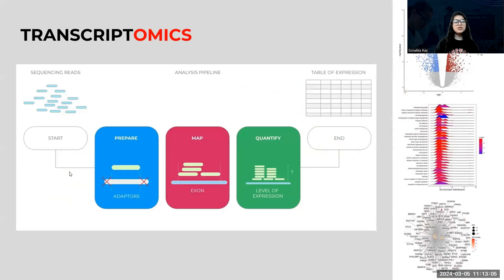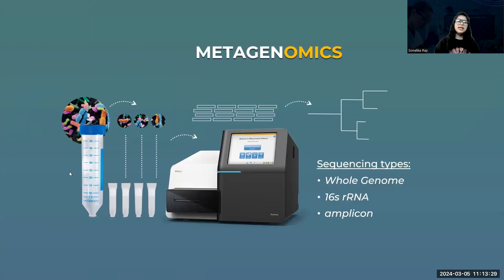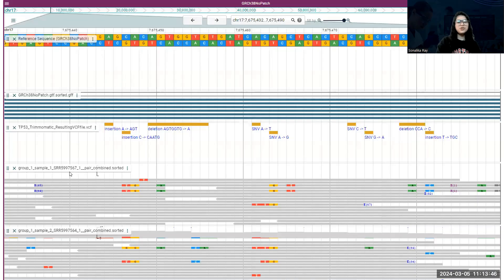Then we'll dive into an introduction to transcriptomic data analysis. Transcriptomics is the study of RNA and gene expression. We'll guide you through the entire process from sequencing reads to the analysis pipeline, culminating in a table of gene expression. You'll learn about the tools and algorithms that transform raw data into meaningful insights. Then we'll learn about metagenomics, which opens up a universe of microbial diversity. Our sessions will cover quality control, taxonomic classification, and the interpretation of metagenomic data using tools such as DADA2 for denoising and dereplication of sequencing data.